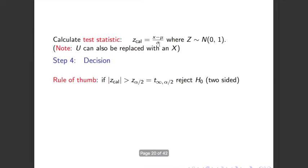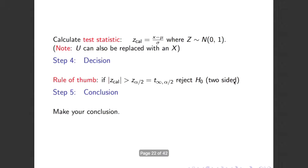Step four is the decision. If the absolute value of the test statistic is greater than the critical value, reject H0. Your conclusion is based on that decision: if you reject H0, state there is sufficient evidence at the specified level of significance to reject H0. If you fail to reject, state there is insufficient evidence at the specified significance level alpha to reject H0, and make your conclusion accordingly.